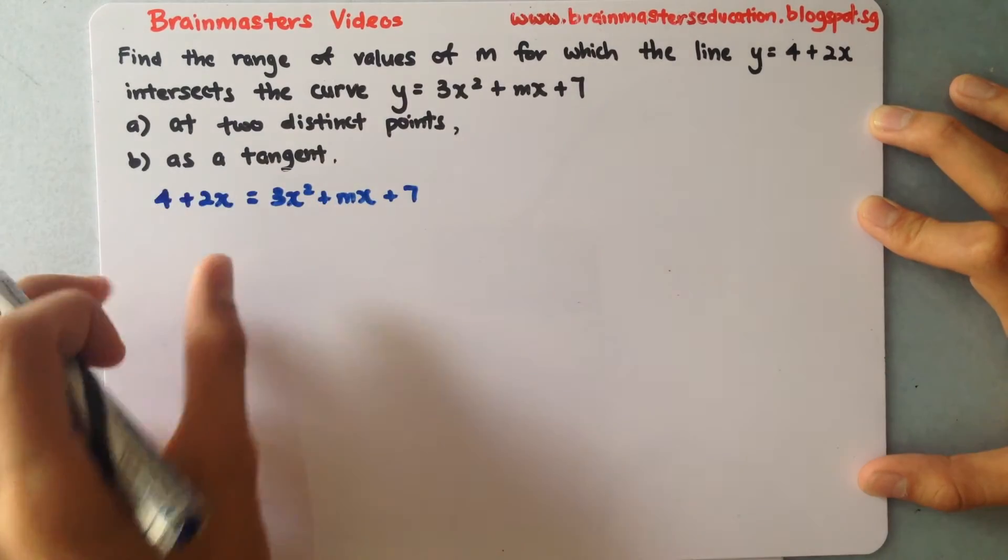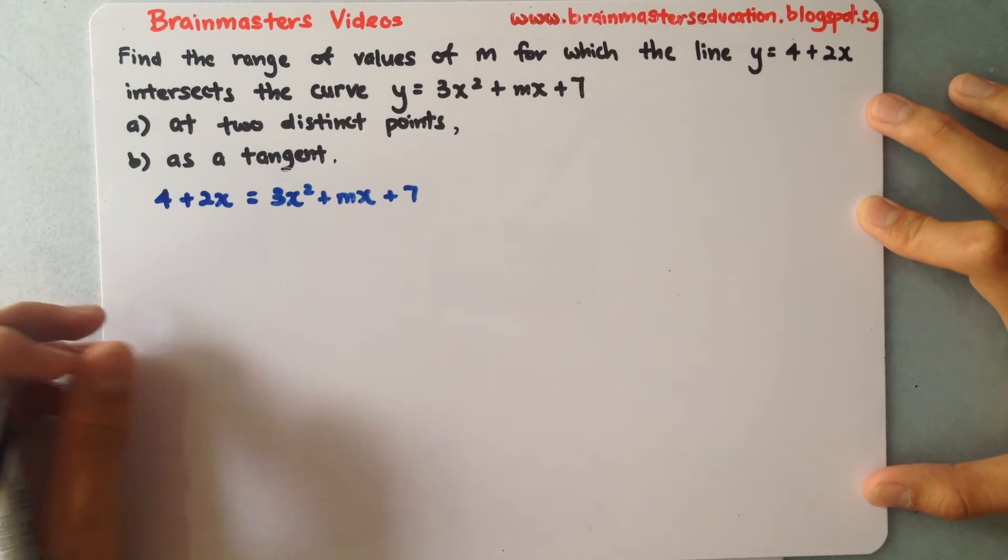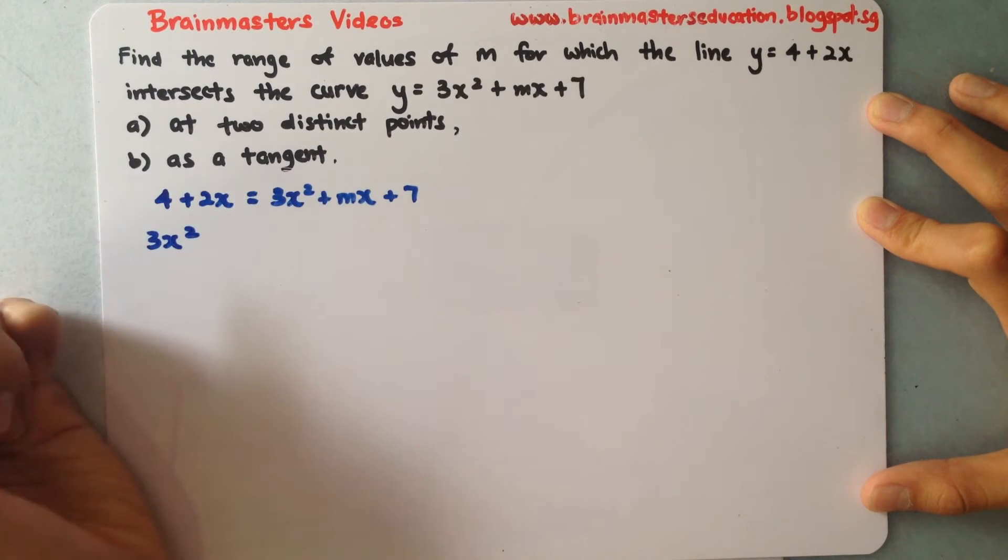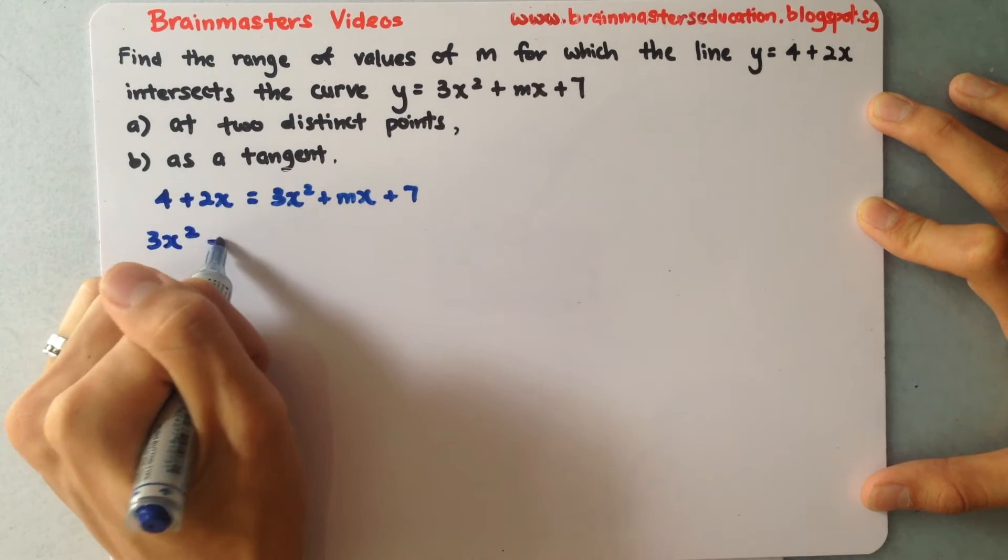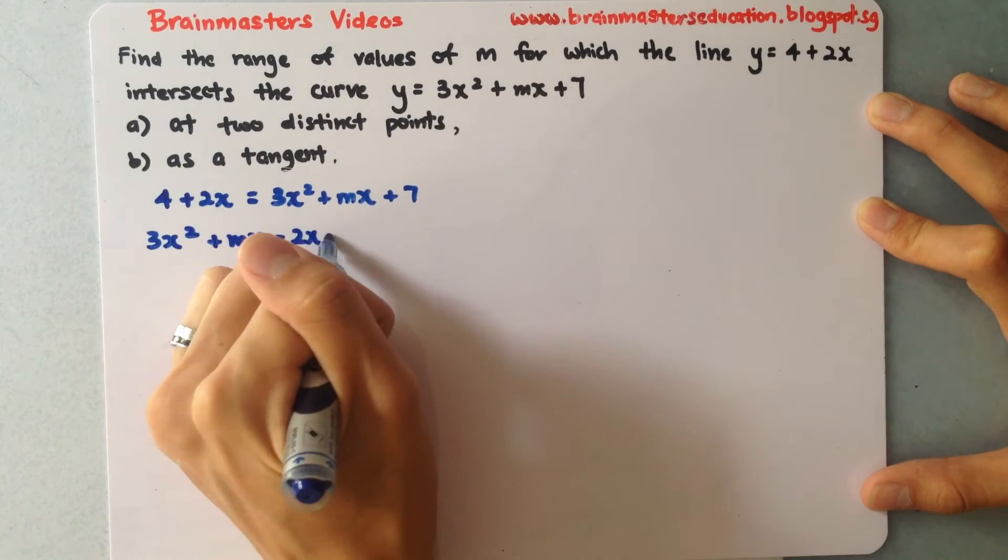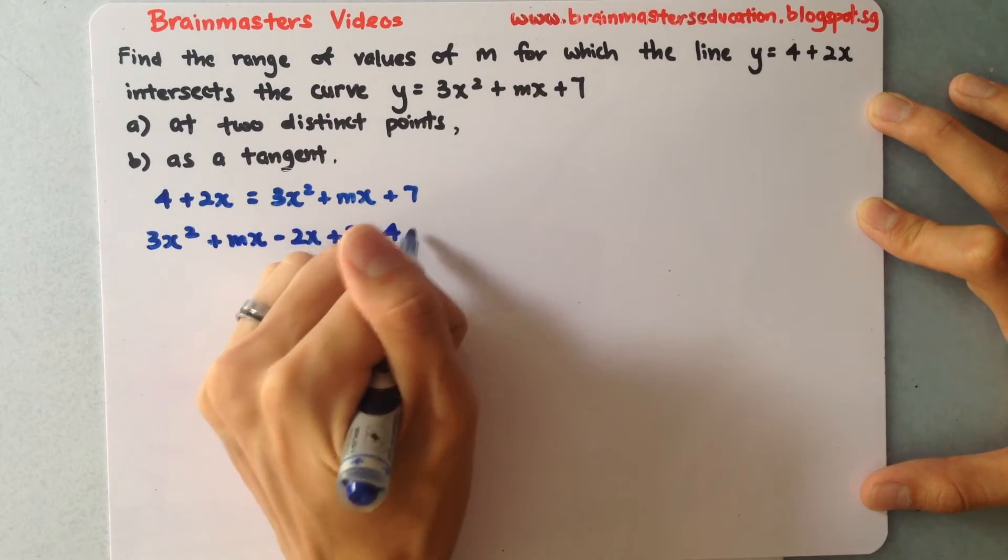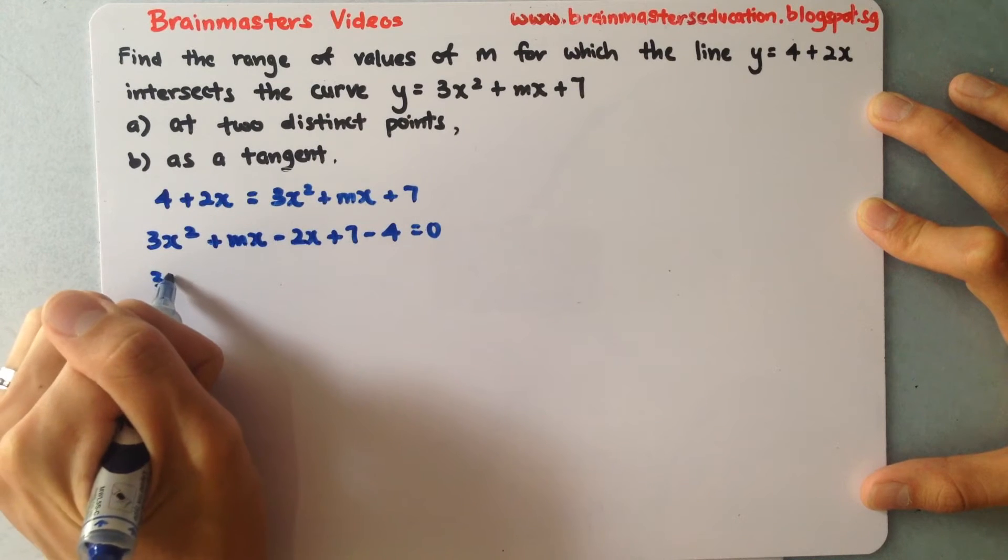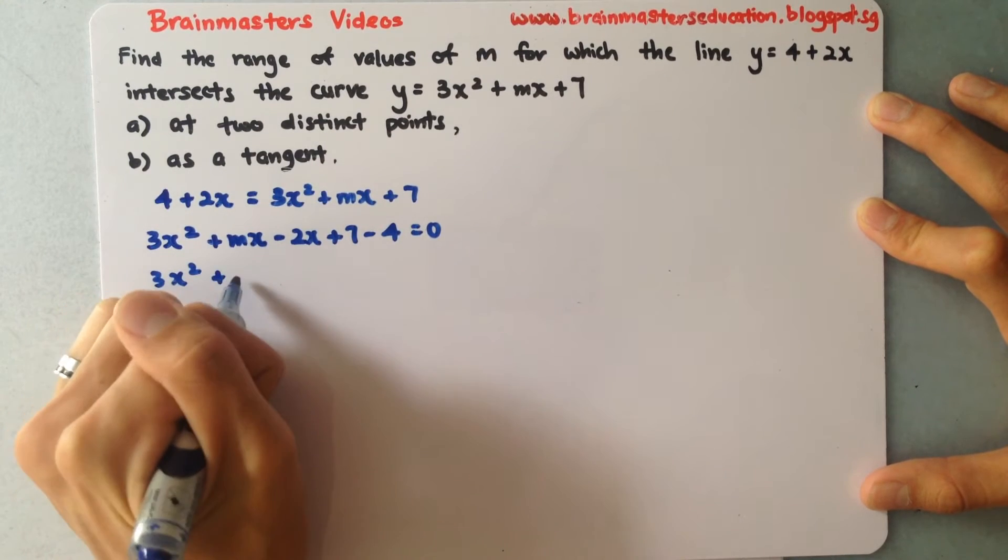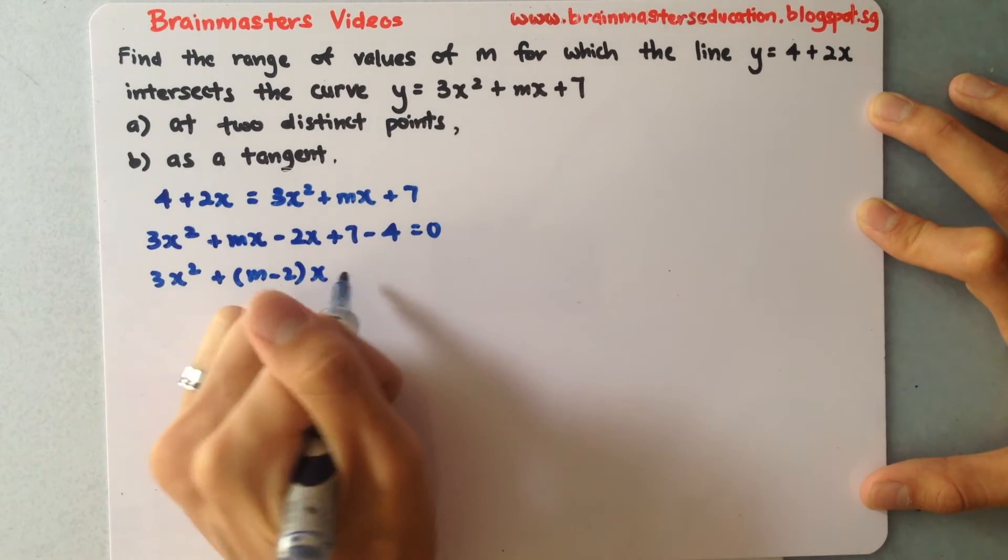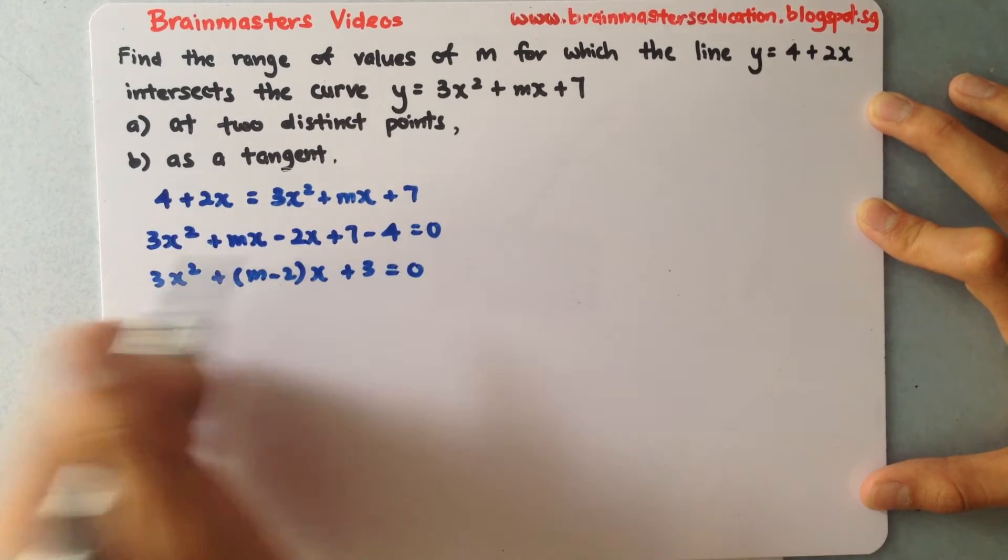Shift everything to one side and set it equal to 0. So I have 3x² + mx - 2x + 7 - 4 = 0. Simplifying: 3x² + (m - 2)x + 3 = 0.